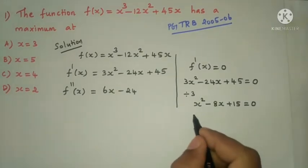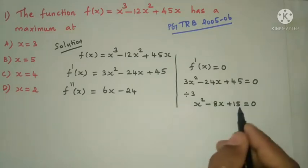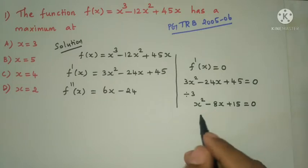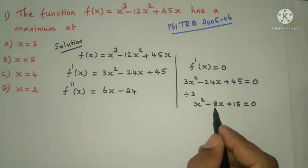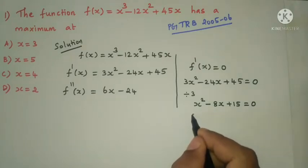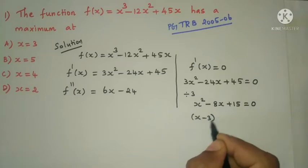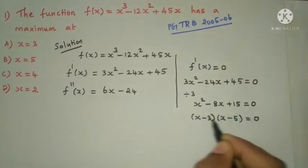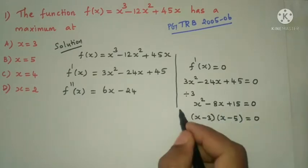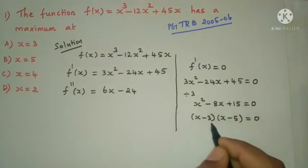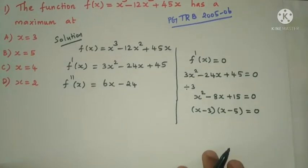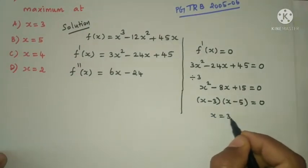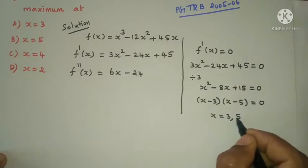Factorizing x² minus 8x plus 15 equals 0 gives (x minus 3)(x minus 5) equals 0, so the critical numbers are x equals 3 and x equals 5.